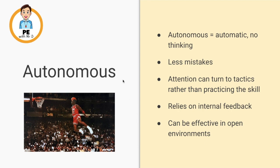Finally, we have the autonomous stage — the expert stage. Autonomous means automatic, so there's not much thinking going on. Fewer mistakes are being made because the skill has been mastered through lots of deliberate practice. Now we can turn our attention to tactics and other things in the game rather than focusing on the skill itself. We can rely on internal feedback to correct ourselves, and we can be really effective in open environments such as a game, where there is a crowd, opponents, and other distractions.